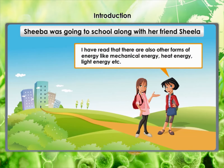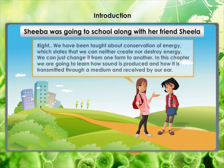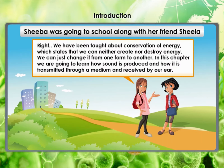There are also other forms of energy like mechanical energy, heat energy, light energy, etc. The law of conservation of energy states that we can neither create nor destroy energy — we can just change it from one form to another. In this chapter, we are going to learn how sound is produced, how it is transmitted through a medium, and received by our ear.